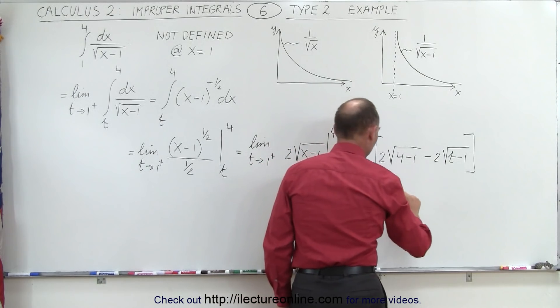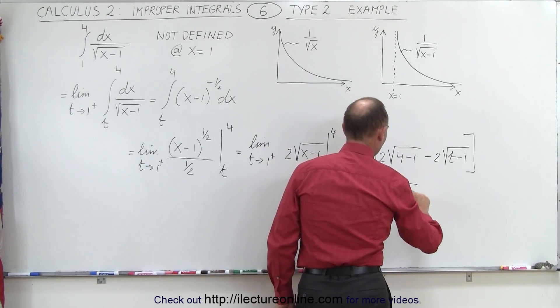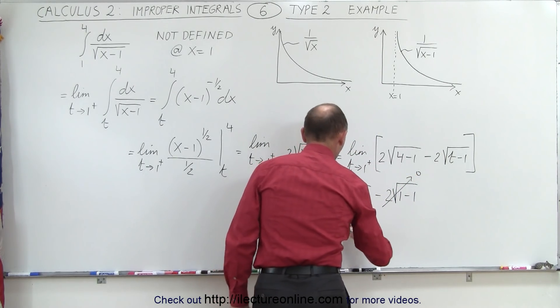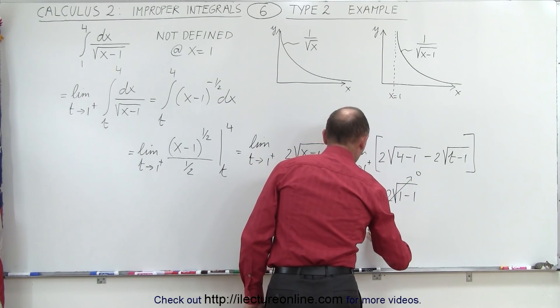we allow t now to go to 1, so it would be the square root of 1 minus 1. Of course, that's equal to 0, so this term disappears, and we end up with 2 times the square root of 3.